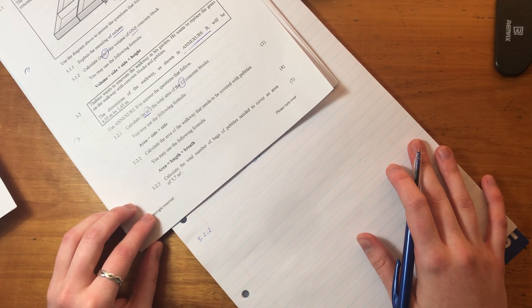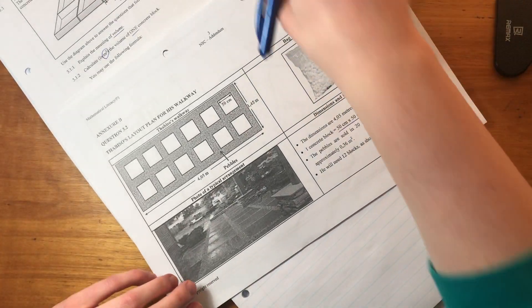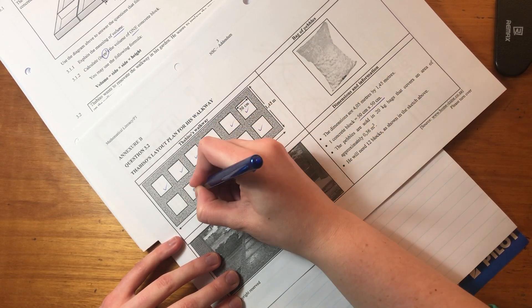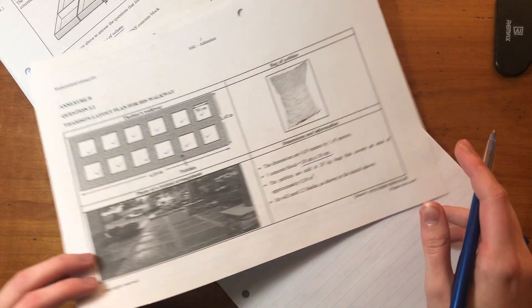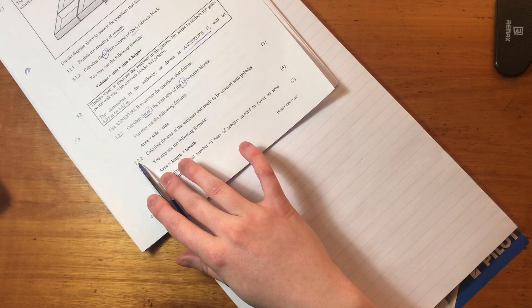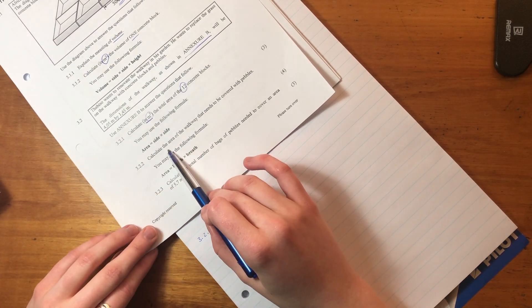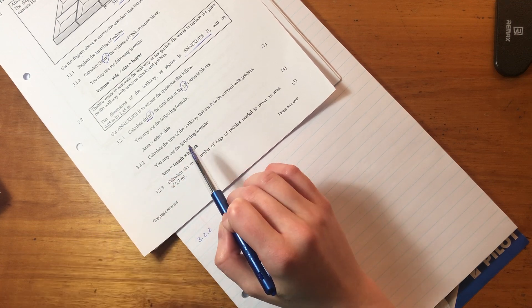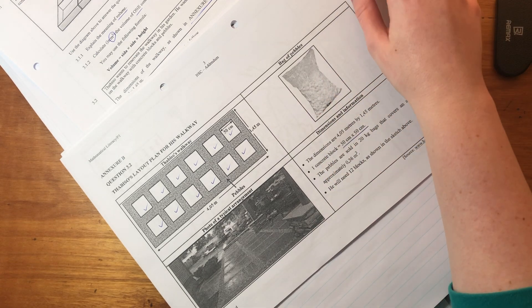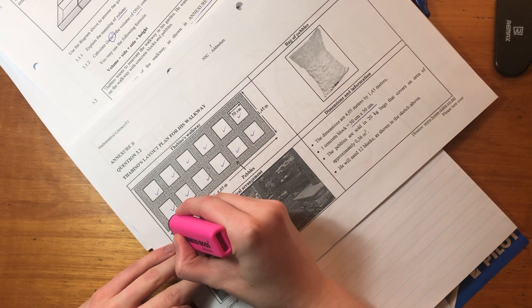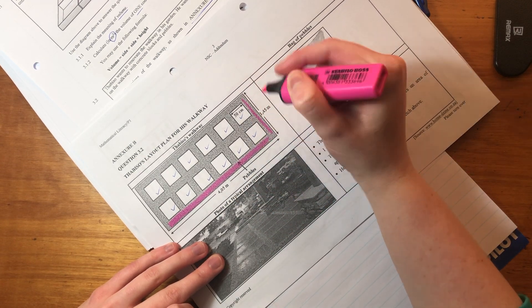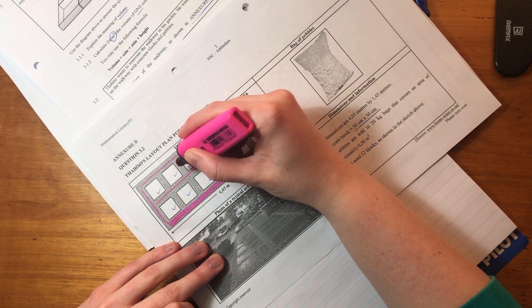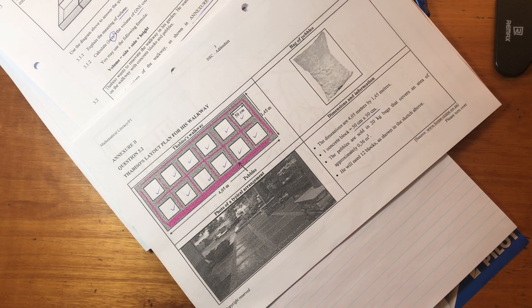So let's just quickly go back to this so that we 100% understand what we're doing. We've calculated the area of basically all of these guys. So I'm putting a little tick in the area that we've calculated, just so that we understand. And then we're going to move on to 3.2.2. Calculate the area of the walkway that needs to be covered with pebbles. They've given us this area. And what they want is they basically want all of this area here, all the area around each of these concrete blocks.